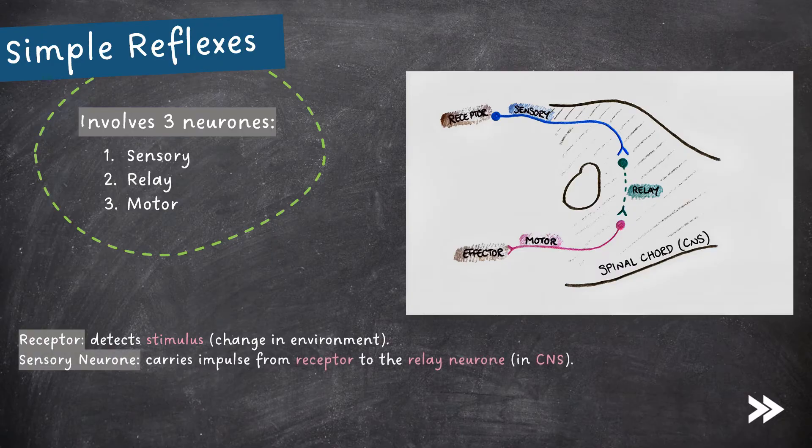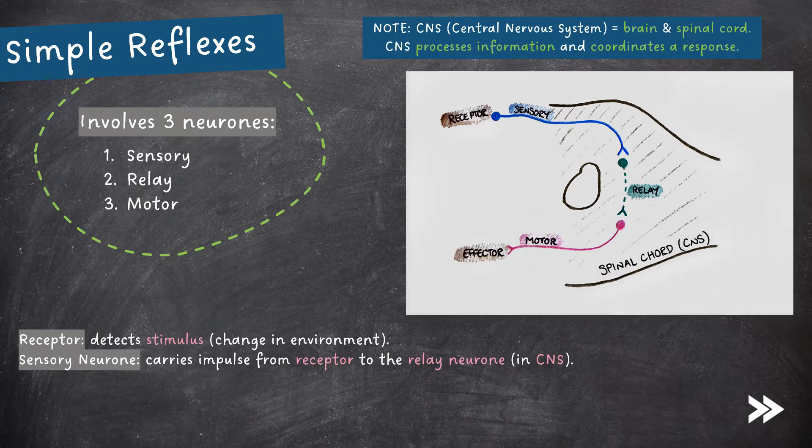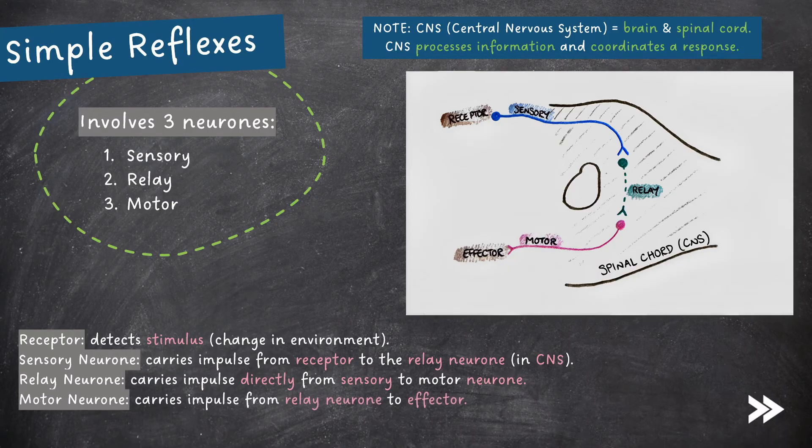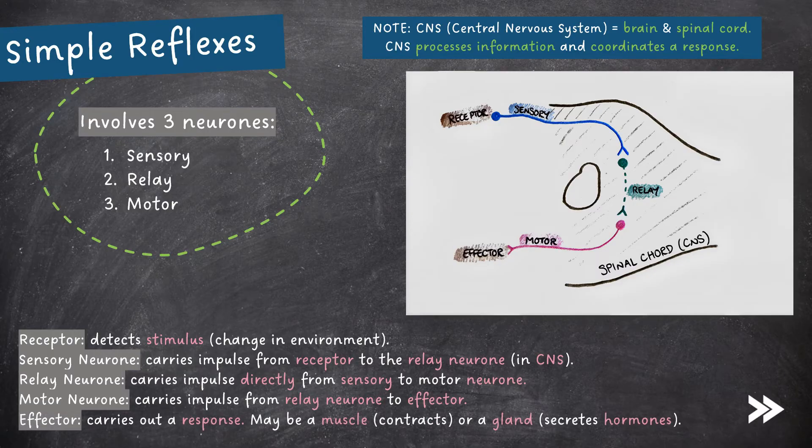Then, a sensory neuron carries the impulse from the receptor to the relay neuron, which is located in the CNS. Note that CNS stands for Central Nervous System, and consists of the brain and the spinal cord. The CNS processes information and coordinates a response. The relay neuron carries the impulse directly from the sensory to the motor neuron. The motor neuron then carries the impulse from the relay neuron to the effector.